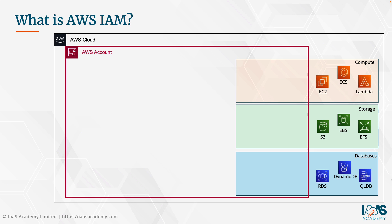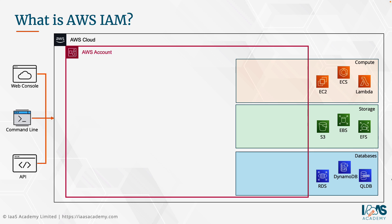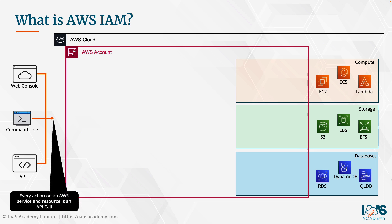But how does it actually all work? Well, in order to get access to those services, you connect to your AWS account through a variety of means — there's the web console, there's the command line interface, and there's also programmatic access using APIs. With these tools in place, you can access a number of different services on the AWS platform. An important aspect to remember here is that all operations that you perform on your AWS account against those services in order to provision necessary resources is done by making what we call API calls.